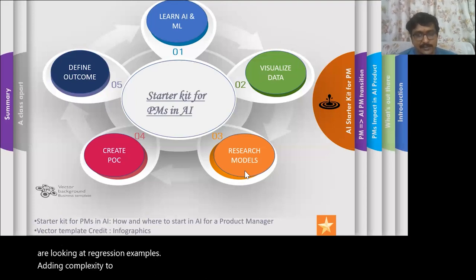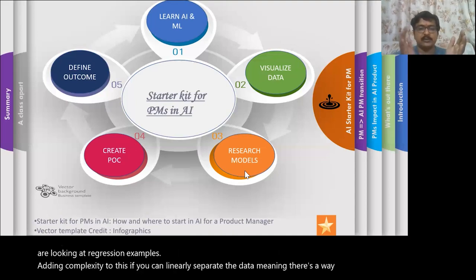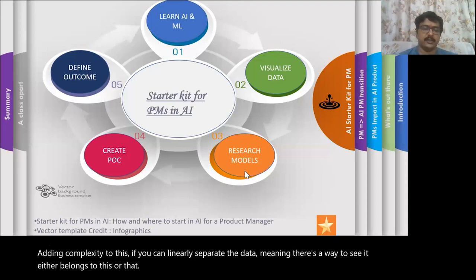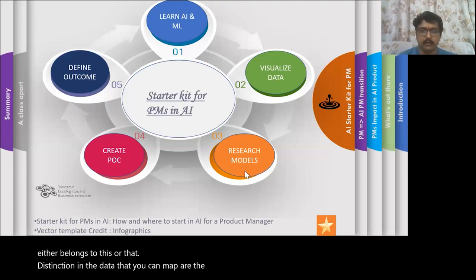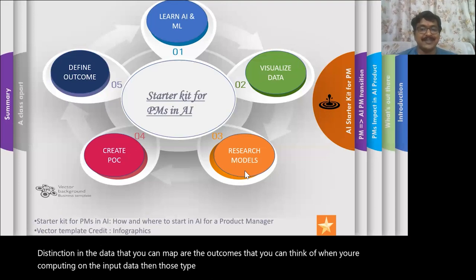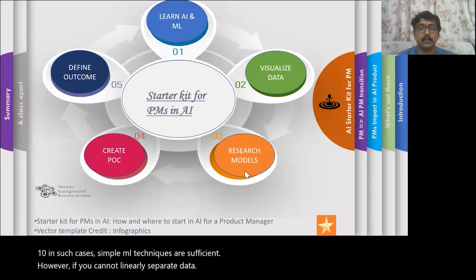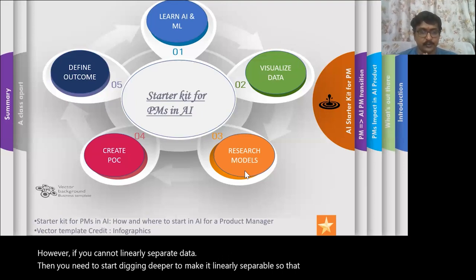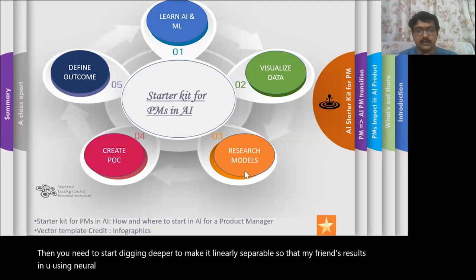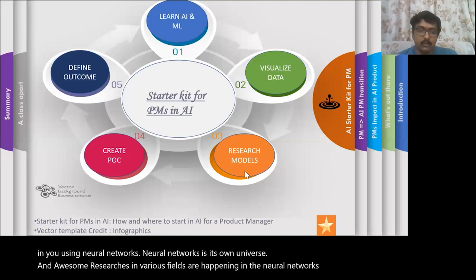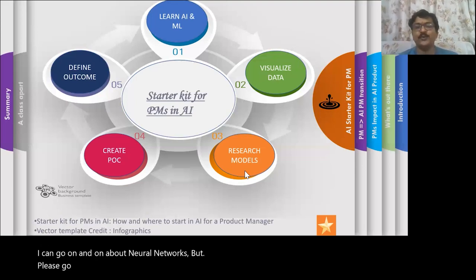Adding complexity to this: if you can linearly separate the data — meaning there is a way to say it either belongs to this or that, if there is a clear distinction in the data or outcomes you can compute — then those types of data are called linearly separable data. In such cases, simple ML techniques are sufficient. However, if you cannot linearly separate the data, then you need to start digging deeper to make it linearly separable, and that results in you using neural networks. Neural networks is its own universe and awesome research in various fields is happening in that world. Please go through courses and do further research on neural networks.